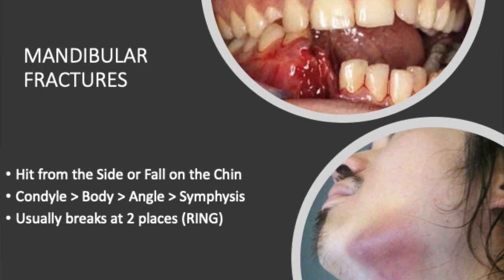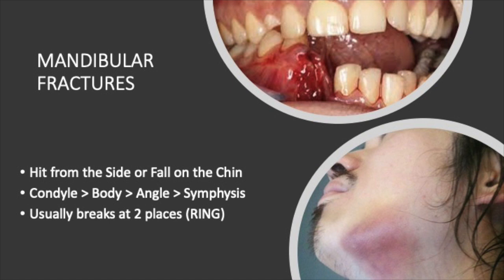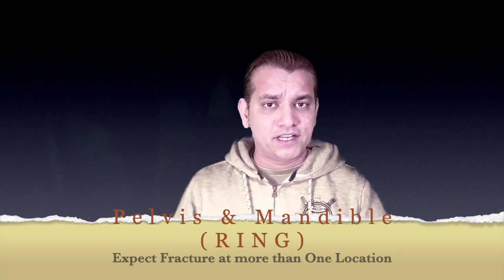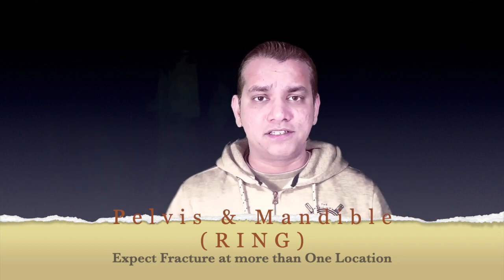Patients with mandibular fractures usually come with a history of a fall over the chin or a hit from the side on the face. The condyle fractures most commonly, followed by the body, the angle, and the symphysis. Think of the mandible as a ring-shaped structure — if you see one fracture, look for another. Similarly, the pelvis also forms a ring shape, and if there is a fracture at one place, expect a fracture elsewhere as well.